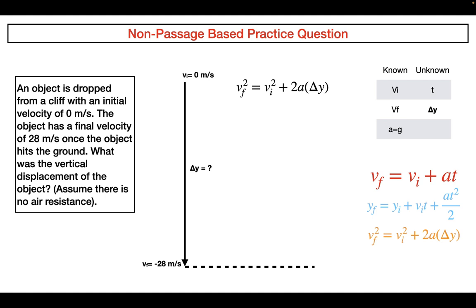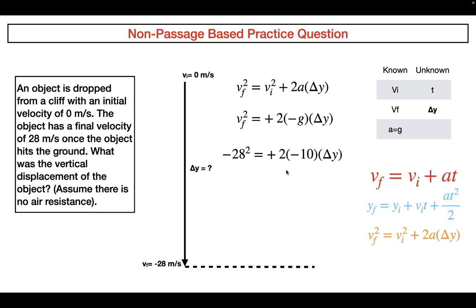The best equation here is VF² = VI² + 2A·ΔY, where ΔY is the vertical displacement. I substitute in the values, using negative g for acceleration since it points toward the ground. The initial velocity is zero, so that term drops out. After simplifying and doing the algebra, the vertical displacement comes out to negative 39.2 meters. That's why choice A is the correct answer.